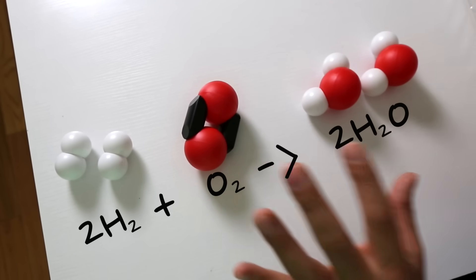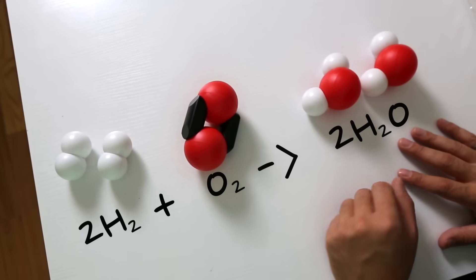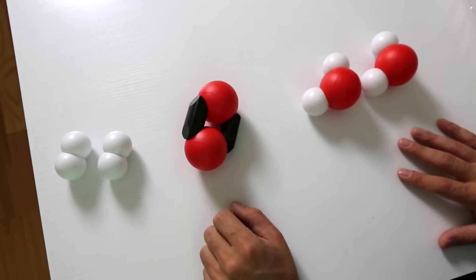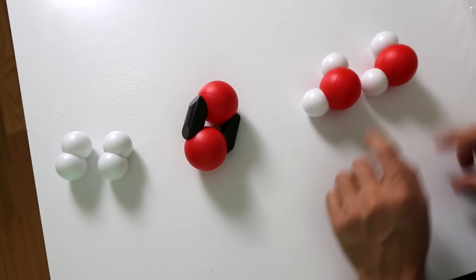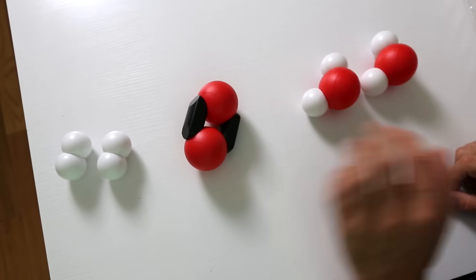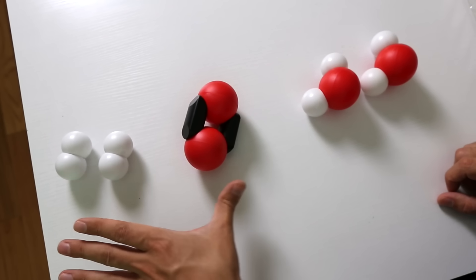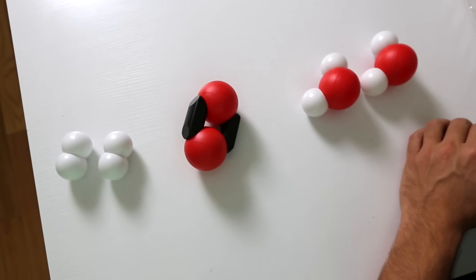So we now have a balanced chemical reaction. We've got four hydrogen atoms here, we have four there. We have two oxygen atoms here, we have two here. So now we have the same number and type of atoms on the left as we do on the right.